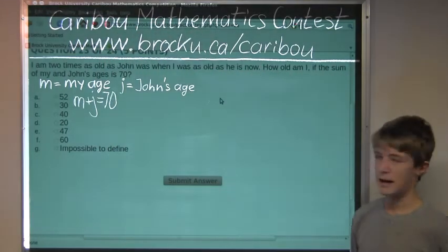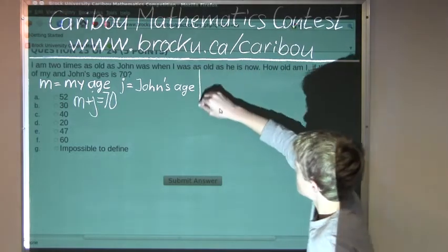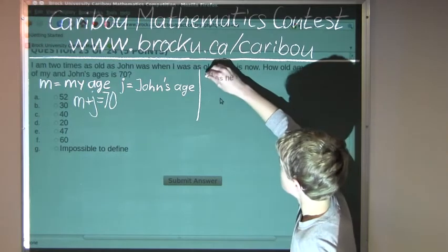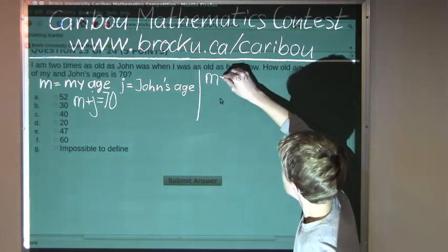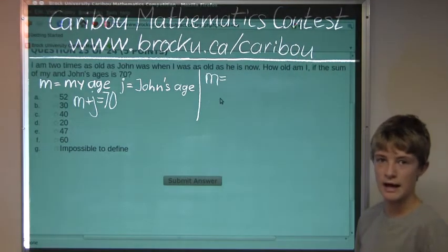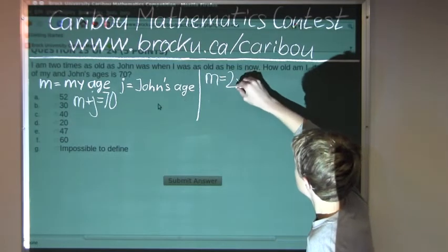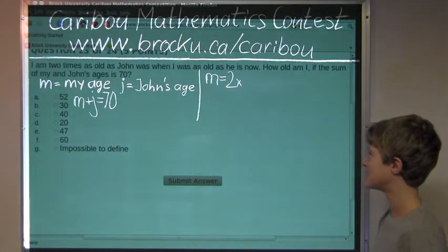Now the harder statement. And that is, I am... m equals two times as old as John was when I was as old as he is now.